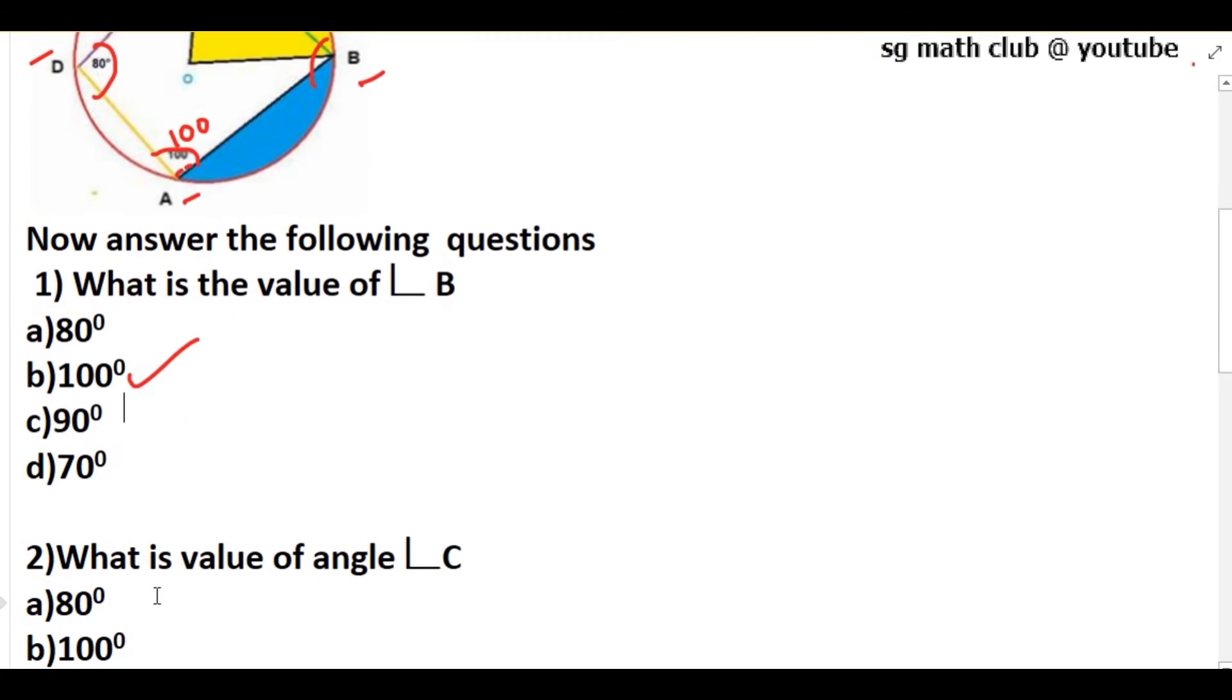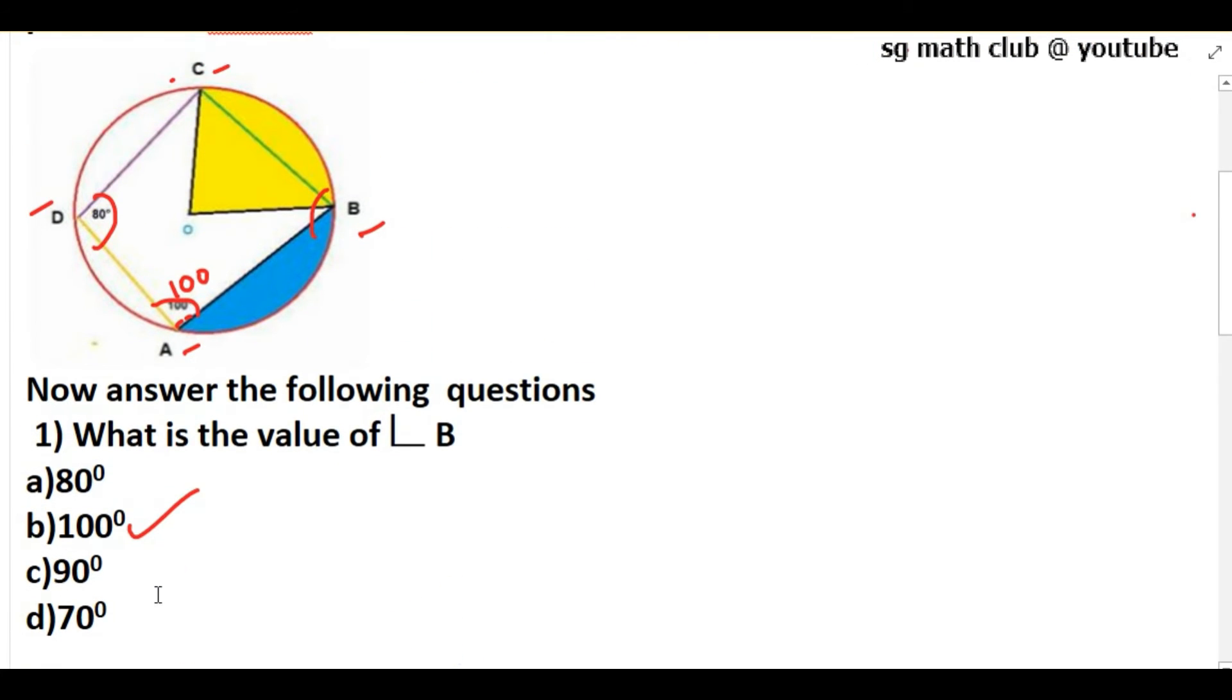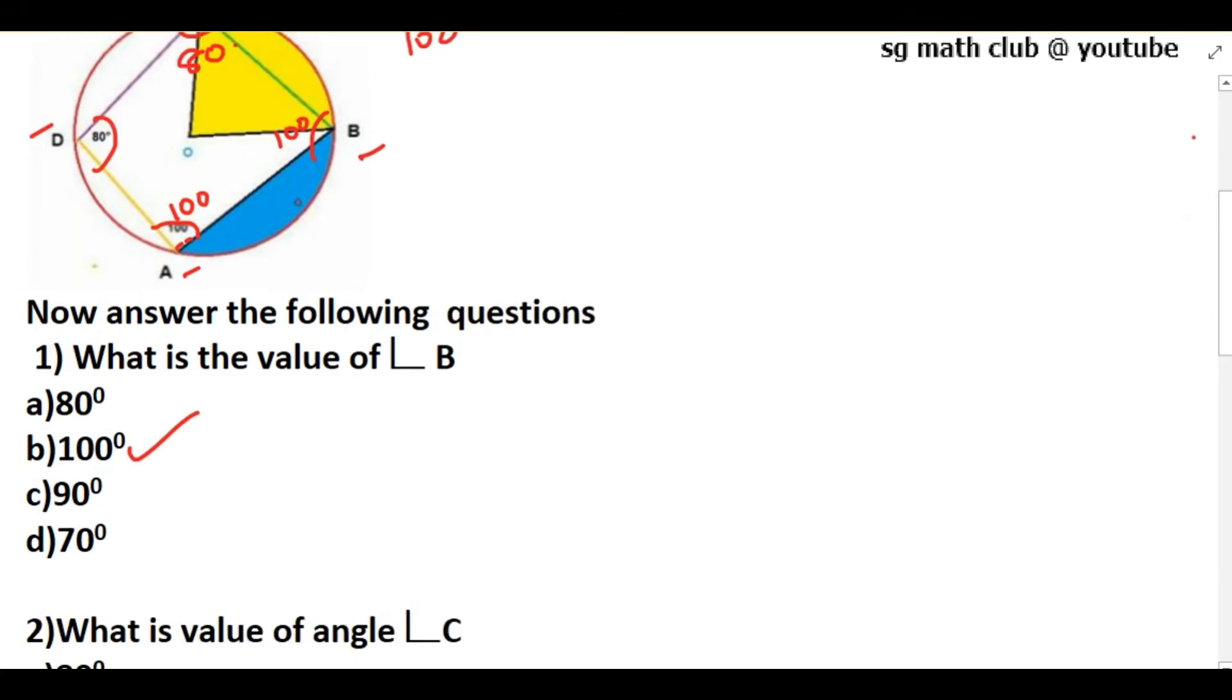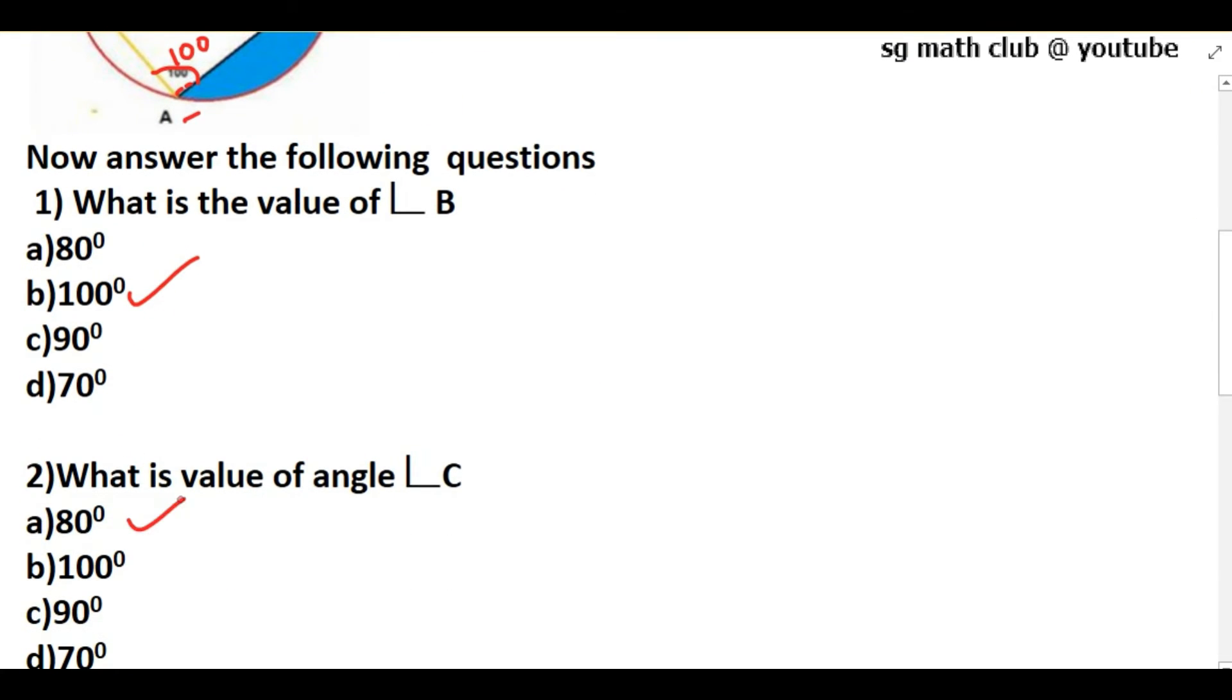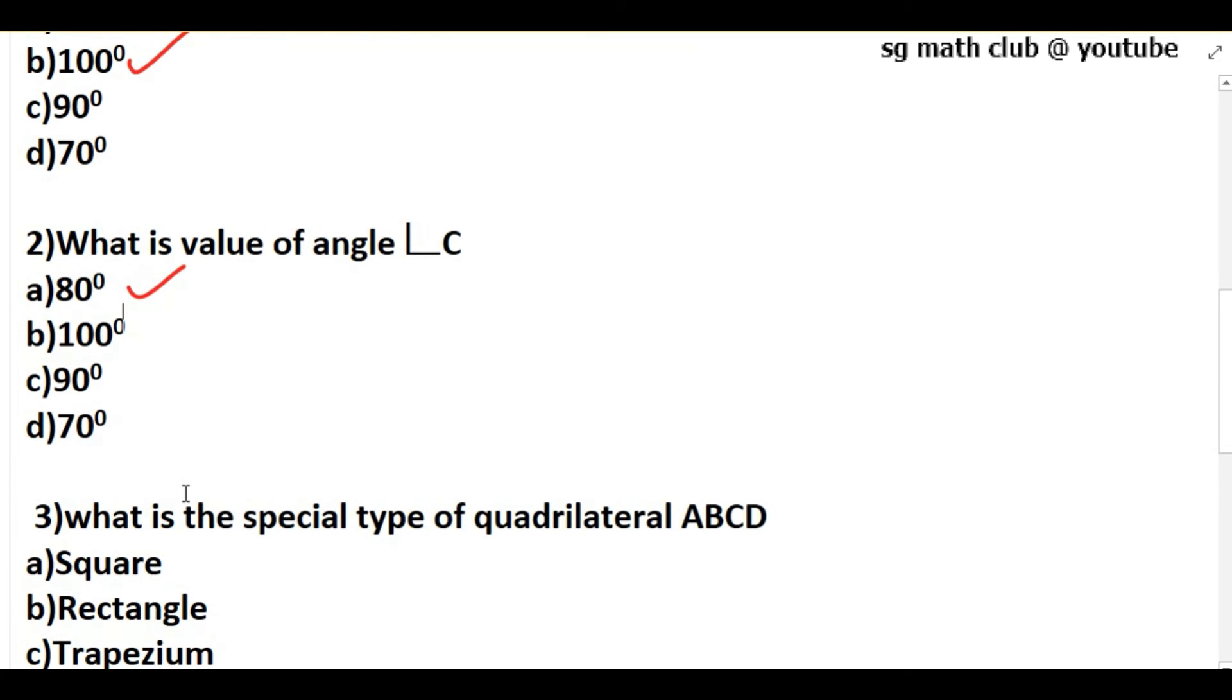Next question: what is the value of angle C? Again, we use the same principle. Opposite angles of a cyclic quadrilateral are supplementary, so 180 minus 100 equals 80 degrees. So angle C is 80 degrees, angle A is 100 degrees, and angle B is 100 degrees.